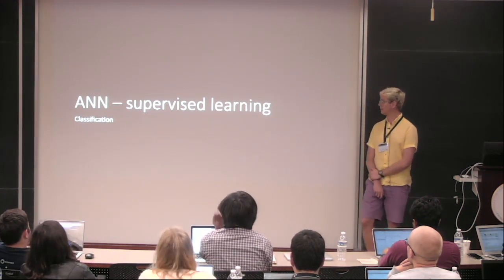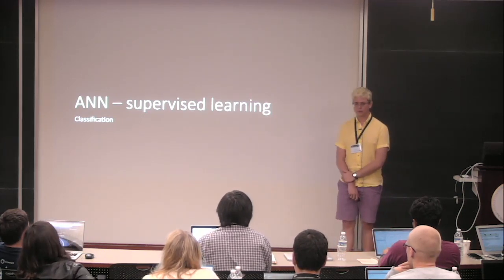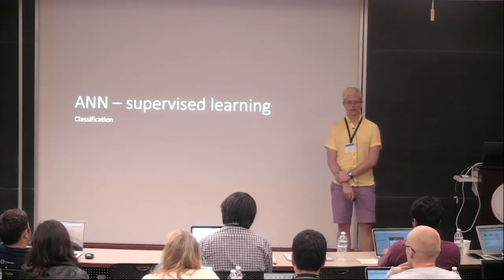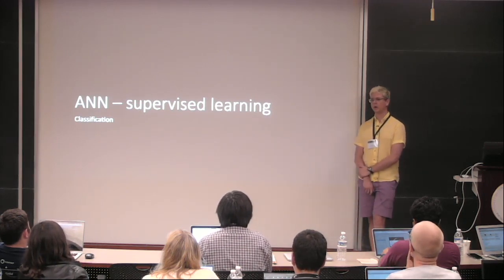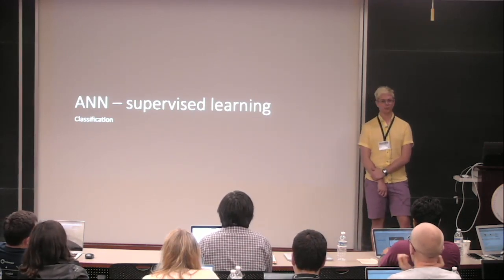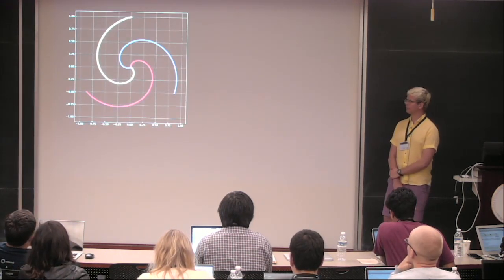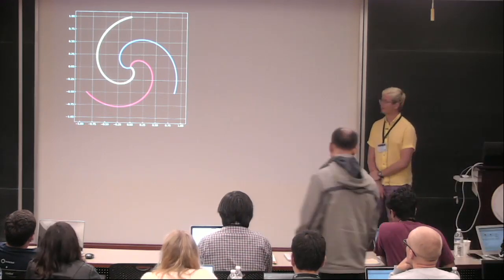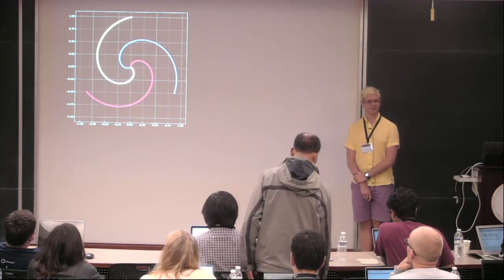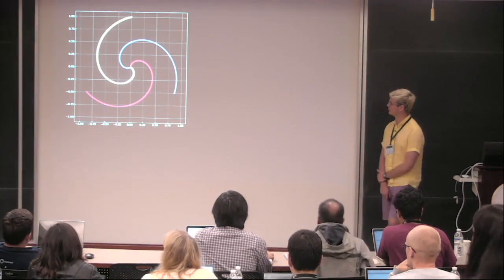We start with supervised learning classification. We're going to try to do some fun stuff and see how a neural network tries to solve this kind of problem. Our initial point is going to be trying to generate nice colored spirals, because everyone likes spirals.